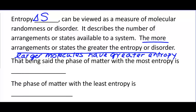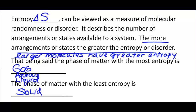The phase with the most entropy is gas, and the phase with the least entropy is solid. Aqueous is next because that's more than one thing — greater arrangements — and then liquid comes before solid. So, in decreasing order of entropy: gas, then aqueous, then liquid, then solid.